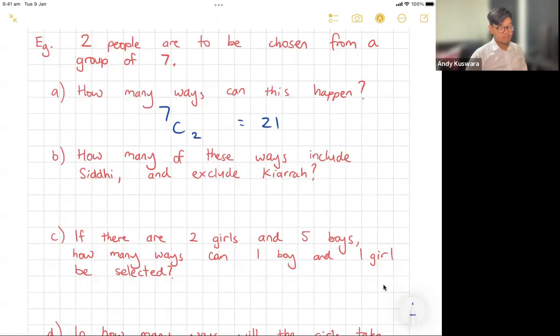Now, how many of these would include Siddhi and exclude Chiara? The way that we would do these is: if we include Siddhi, that means we've taken one spot already. That one spot is golden, so that means we've only got one spot left to fill. We're excluding Chiara, so that means we've chosen Siddhi, we've excluded Chiara, that means there's actually only five people left. So how many ways can we choose one from five? If you put 5C1, it should be fairly straightforward—it will be 5.